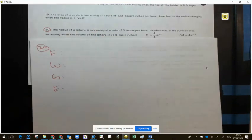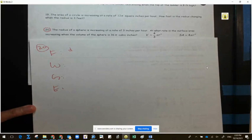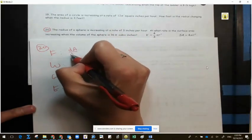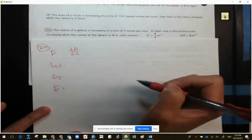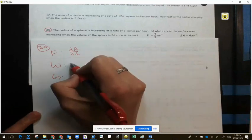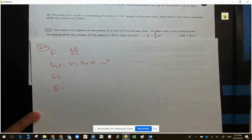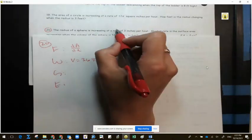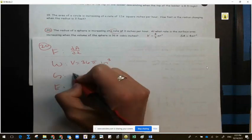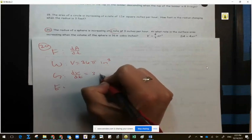What are we looking for? Find the area. So instead of writing out A, F, A, I'm going to write out dA over dt. But whatever variable you use, be consistent with that. And then it says when, which gives us the when. 36 pi inches cubed. Is there a given rate?